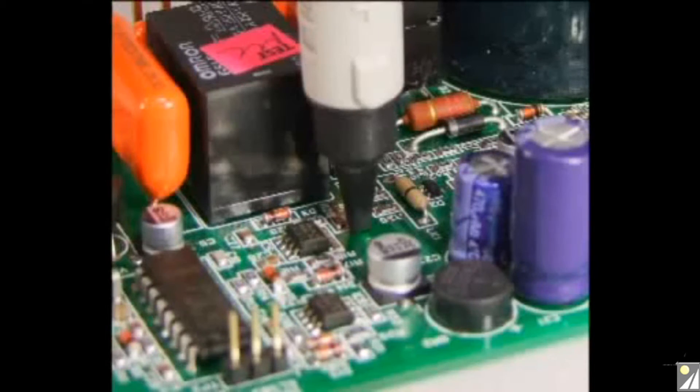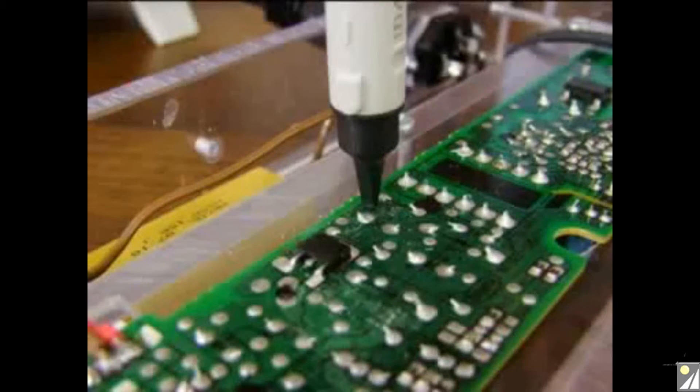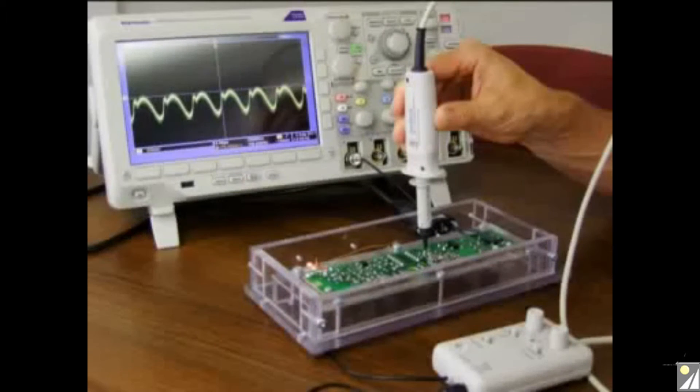This is the AIM iProber 520, designed and built here at AIM TTI. The iProber measures current by simply placing the insulated tip onto the current carrying conductor without making any electrical contact.